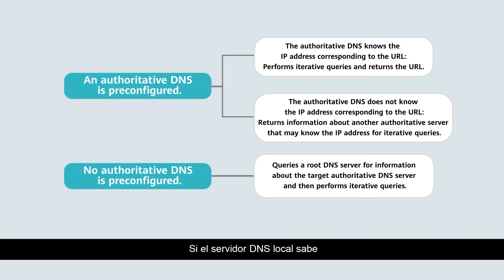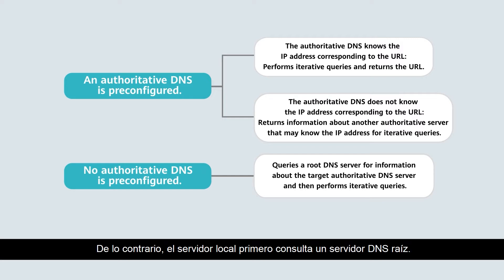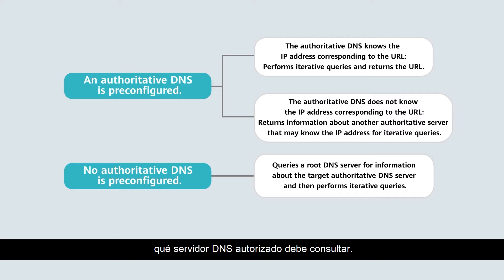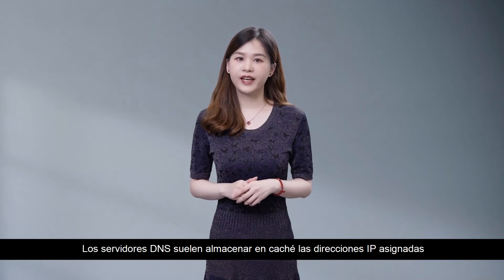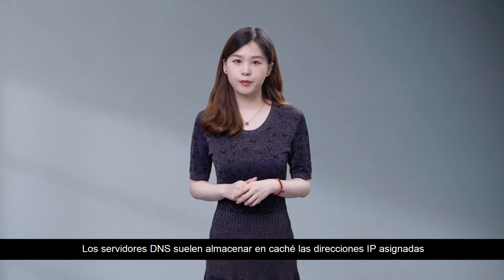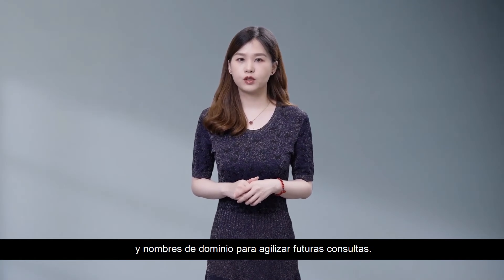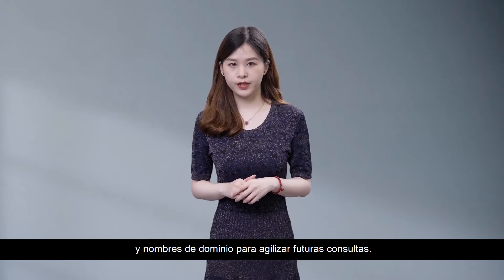If the local DNS server knows where the authoritative DNS server is, it directly queries this server. Otherwise, the local server first queries a root DNS server. The root DNS server then tells the local DNS server which authoritative DNS server it should query. DNS servers typically cache the mapped IP addresses and domain names to speed up future queries.